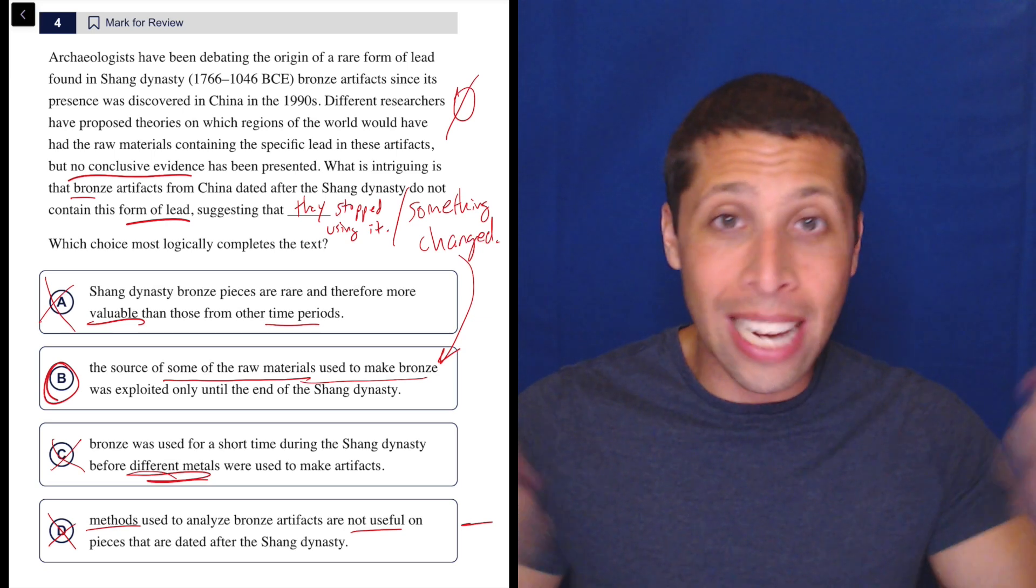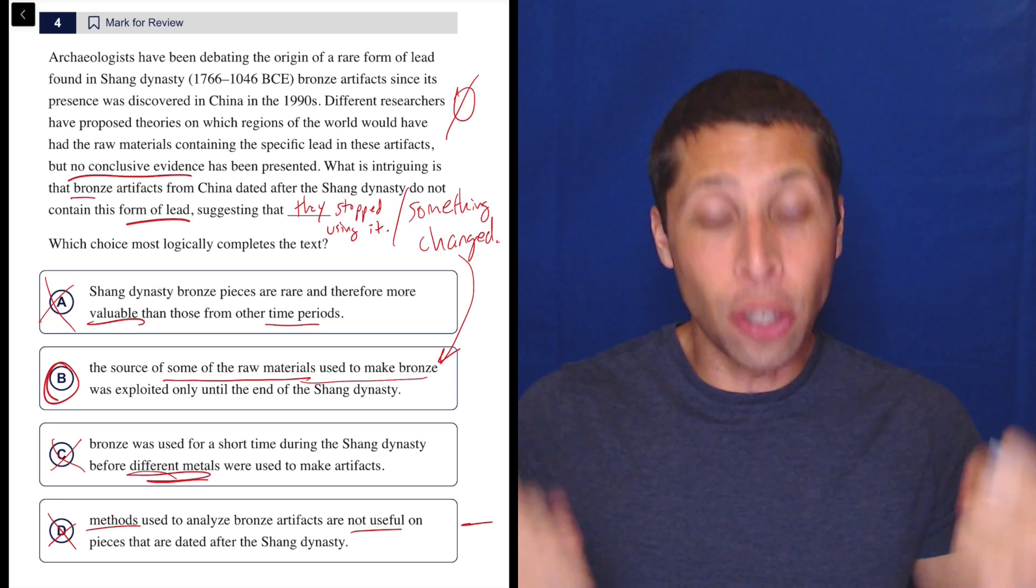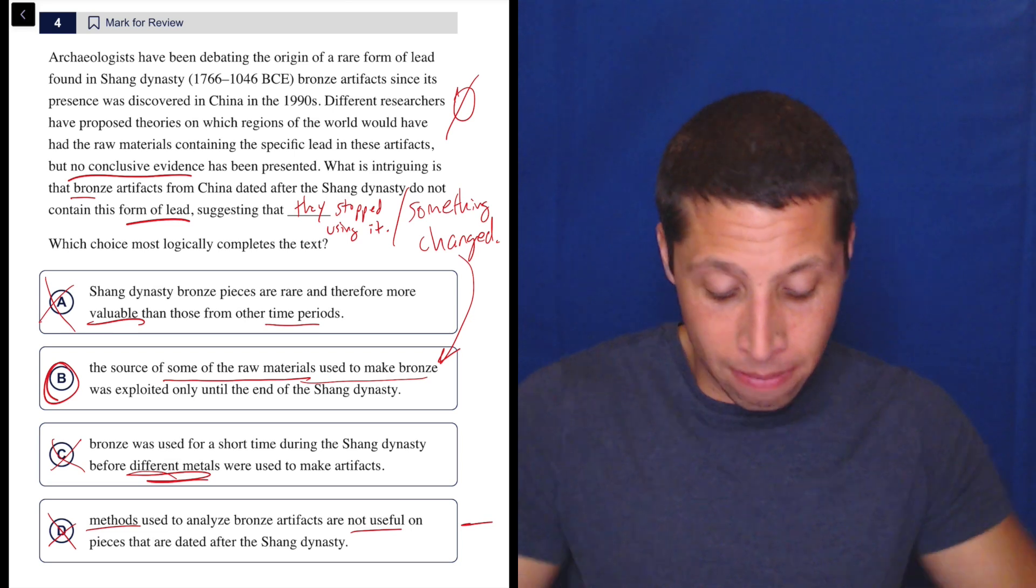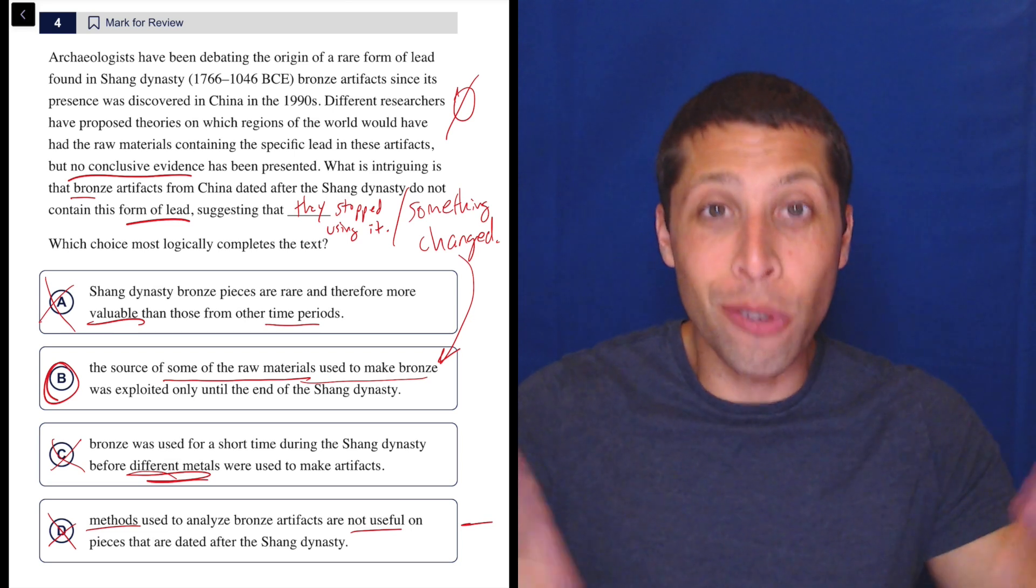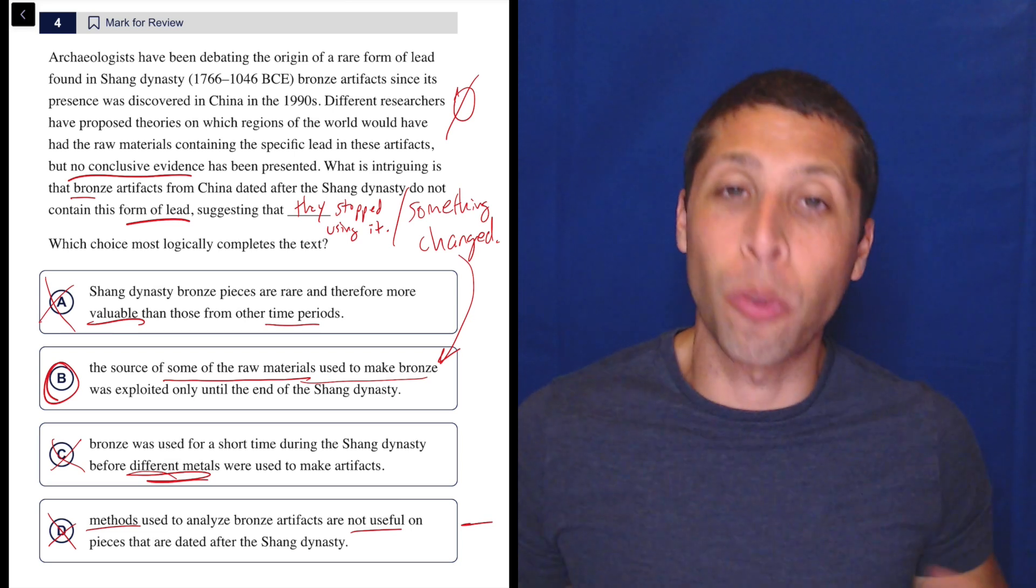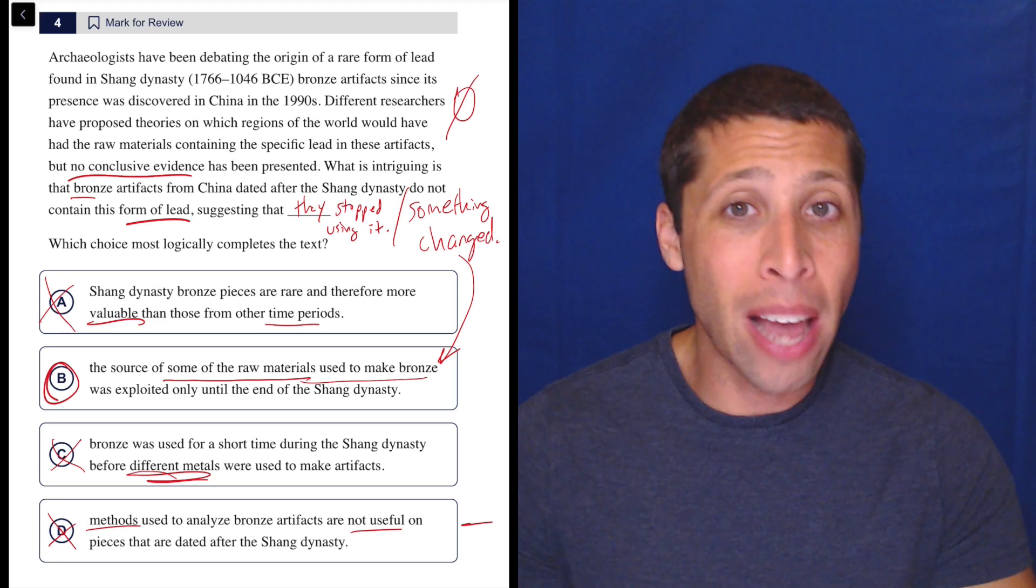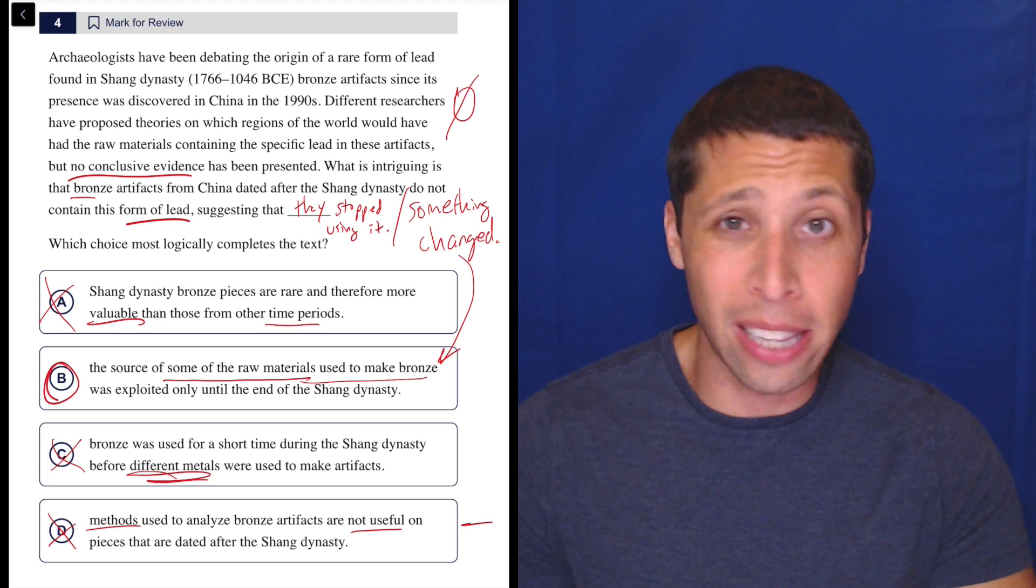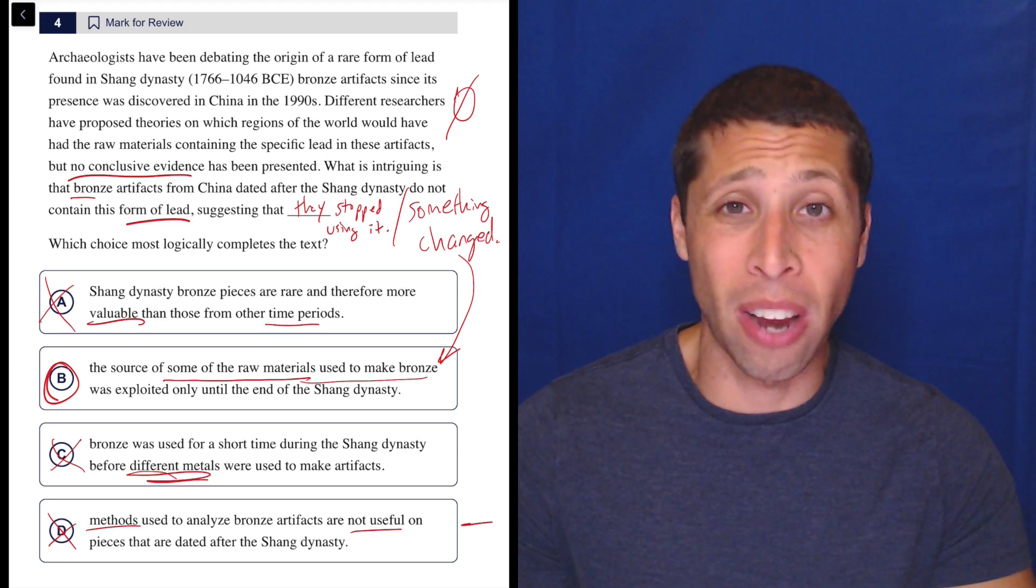You know, if you get too locked into, oh, it's got to talk about lead, you're going to get rid of choice B when it is talking about lead. It's just using the other words besides the word lead. It's a very common thing that they do. If that really bothers you, then yeah, you're going to get a lot of stuff wrong because that's going to happen pretty much every question.